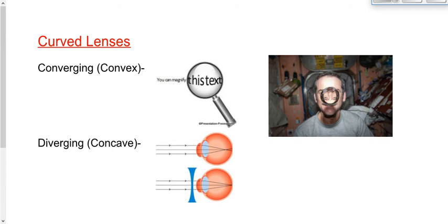Let's have a look at an application of refraction. You can see on the board two different types of curved lenses. Lenses are pieces of glass or plastic shaped to refract light in predictable ways to produce predictable images. The first kind is called a converging or convex lens; the second is called a diverging or concave lens. The convex lens is thicker in the middle than at the edges.